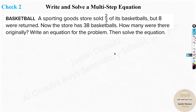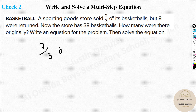Here is a sporting goods problem — pause the video and try it yourself first. A sporting goods store sold two-thirds of its basketballs, but eight were returned. Now the store has 38 basketballs. How many were there originally? Note: since eight were returned, that means more balls came back — it is not a minus.